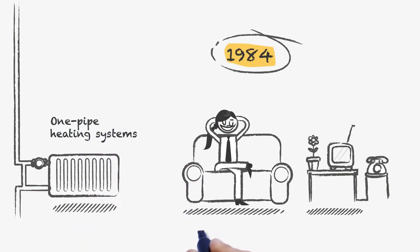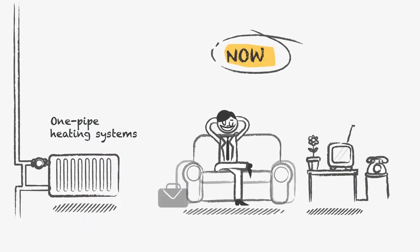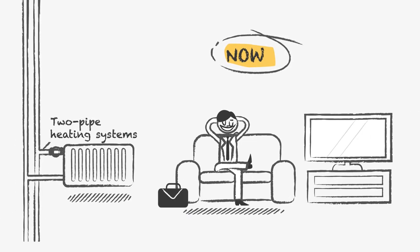Back in the days, one-pipe heating systems were often used in residential buildings. Nowadays, you will see the more modern and energy-efficient two-pipe systems.